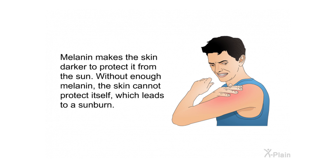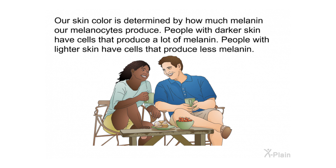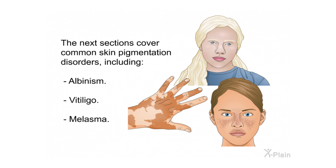Melanin makes the skin darker to protect it from the sun. Without enough melanin, the skin cannot protect itself, which leads to a sunburn. Our skin color is determined by how much melanin our melanocytes produce. People with darker skin have cells that produce a lot of melanin, while people with lighter skin have cells that produce less melanin.